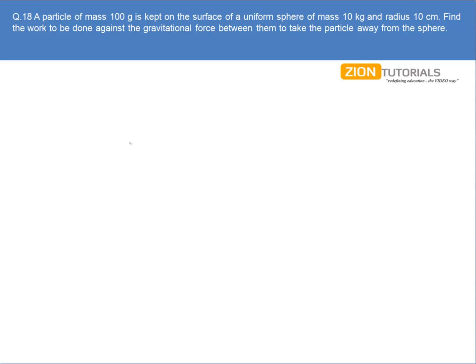A particle of mass m, i.e. 100g, is kept on the surface of a uniform sphere of mass 10kg and radius 10cm. Find the work to be done against the gravitational force between them to take the particle away from the sphere.